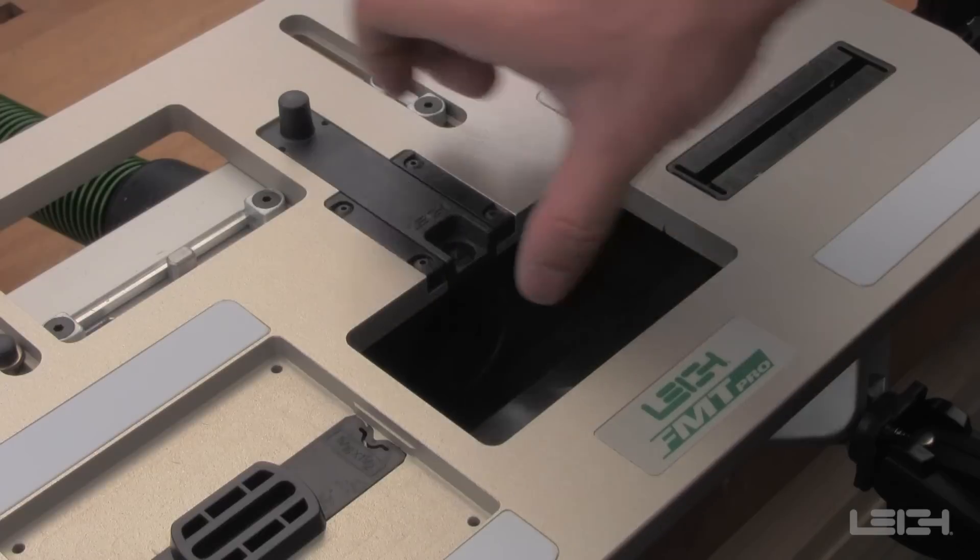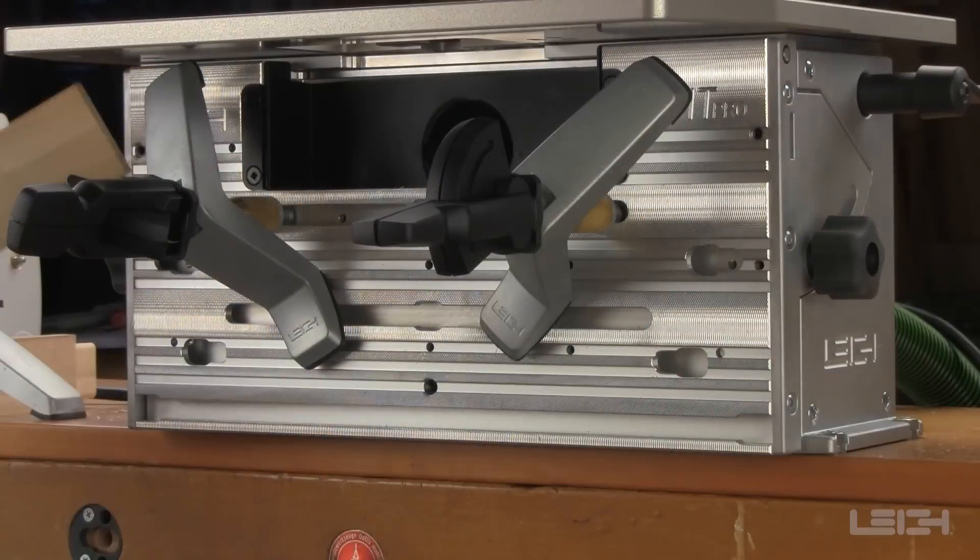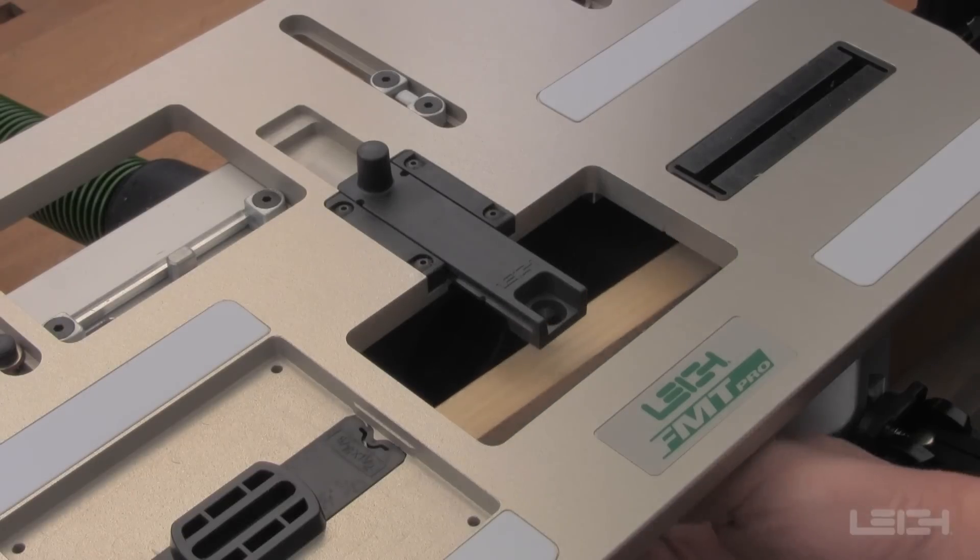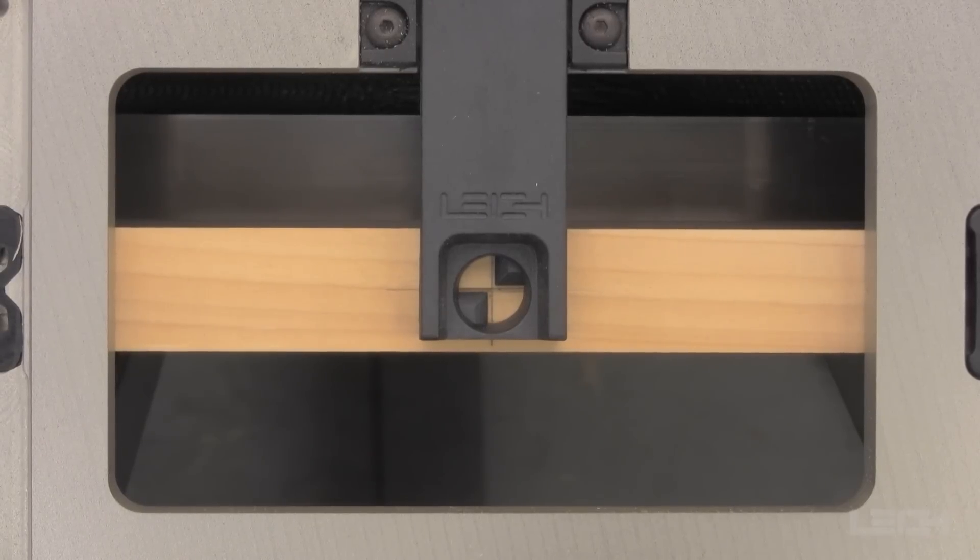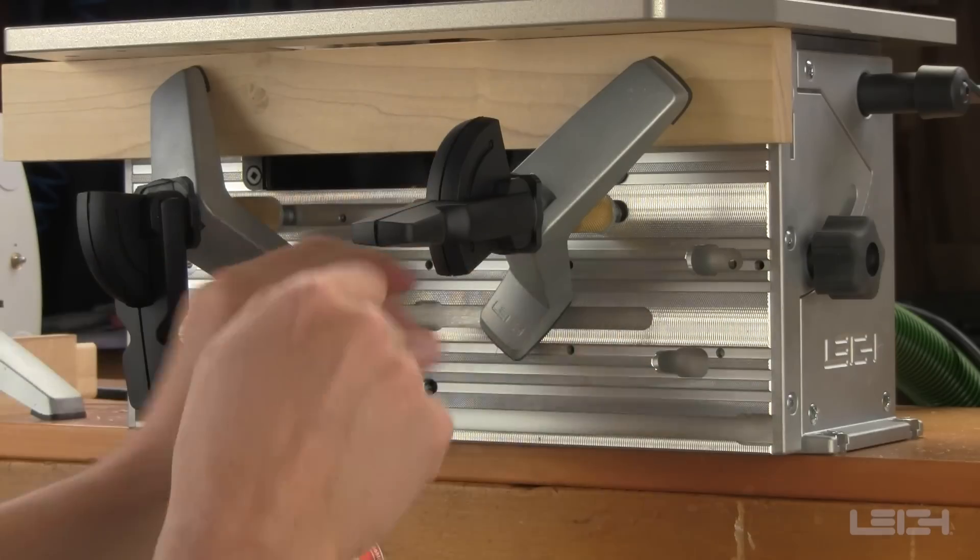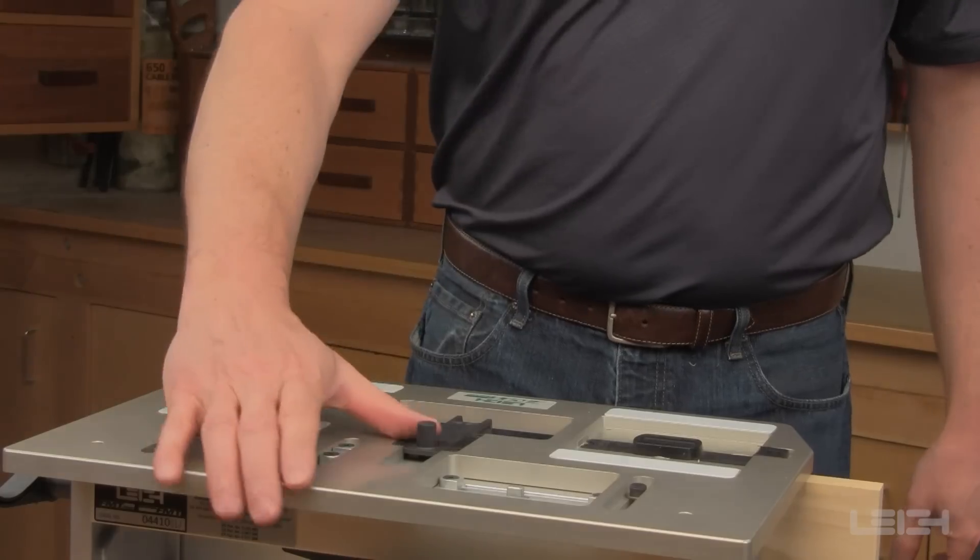With the clamps repositioned, extend the sight and insert the mortise board in the jig. Position the mortise board equally within the cross lines. The front to back position was preset with the tenon board. Clamp it in place and retract the sight.